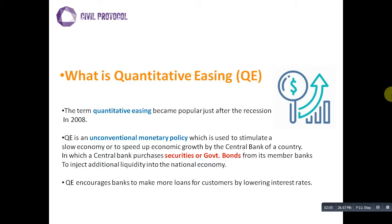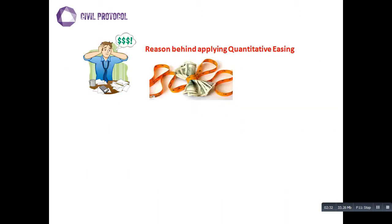After the central bank has generated liquidity into the member banks, those banks now have enough money to make more loans for customers. They attract borrowers by lowering interest rates, which leads to more loans being taken by firms and individuals.